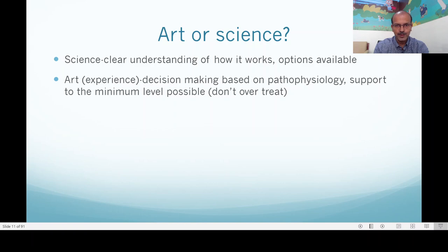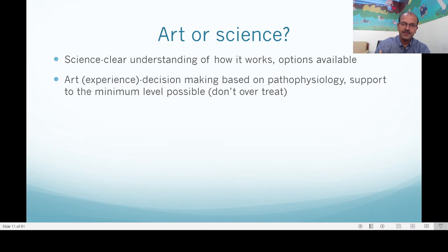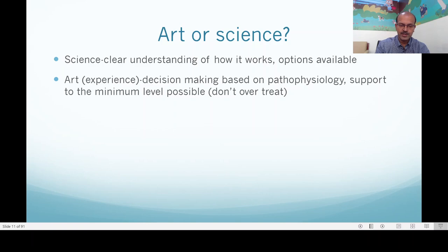The science is a clear understanding of how it works, the pathophysiology, what options you have, and appropriate use of surfactant at the right time. The art is the experience — decision making based on pathophysiology. We should aim to support at the minimum level possible which is safe for the patient's condition. Don't over-treat. Support to maintain what is needed for the patient and don't aim for numbers specifically — look for the physiologic stability of the patient. For example in congenital diaphragmatic hernia, don't overventilate the lungs; accept a lower level of FiO2 provided the child is not acidotic. We have the concepts of permissive hypotension and permissive hypercapnia depending on the situation, age, and condition of the patient.